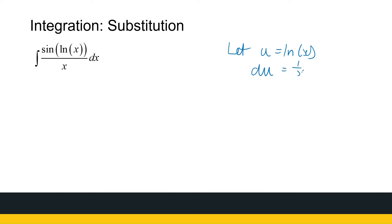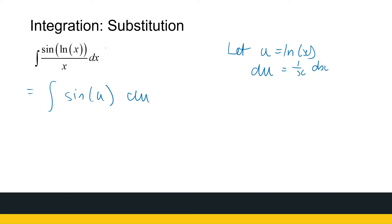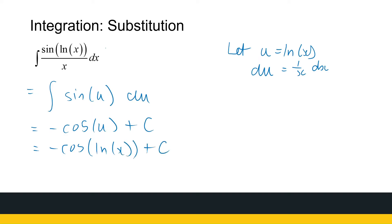du is 1 over x dx. Do I have that? Yes, I've got 1 over x dx, so I can make my substitution. That's the integral of sin of u — 1 over x dx is just du — so it's the integral of sin of u du. And what is that? That's minus cos of u plus the integration constant. So that's minus cos of ln x plus c.